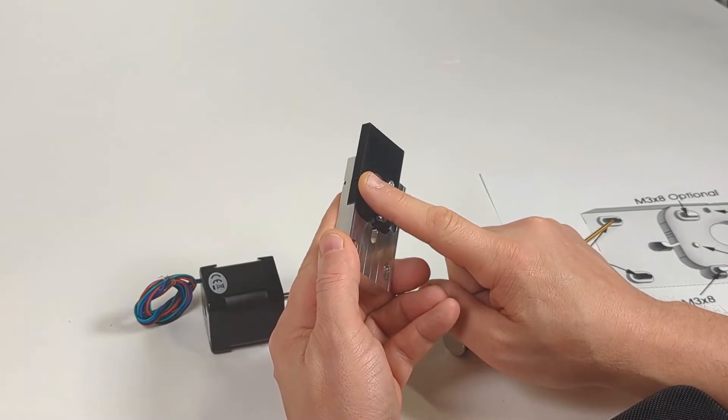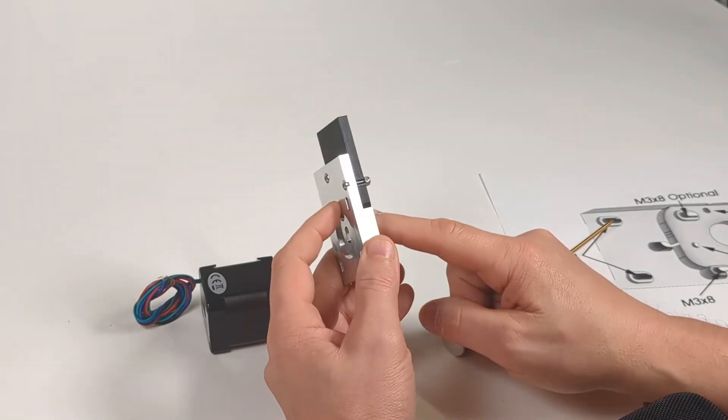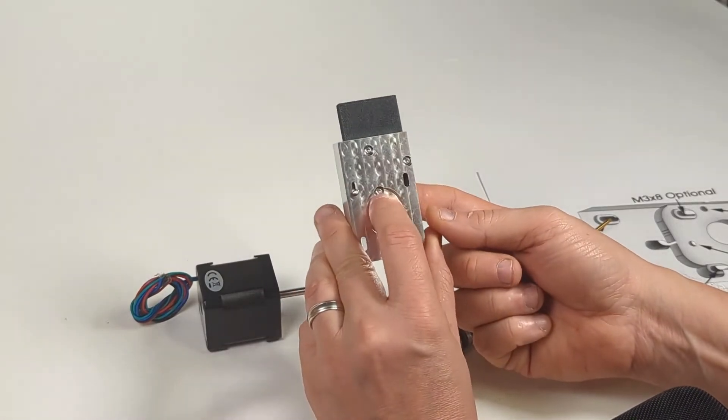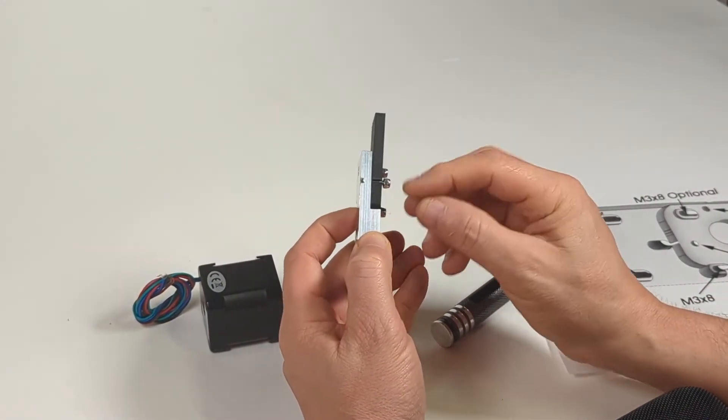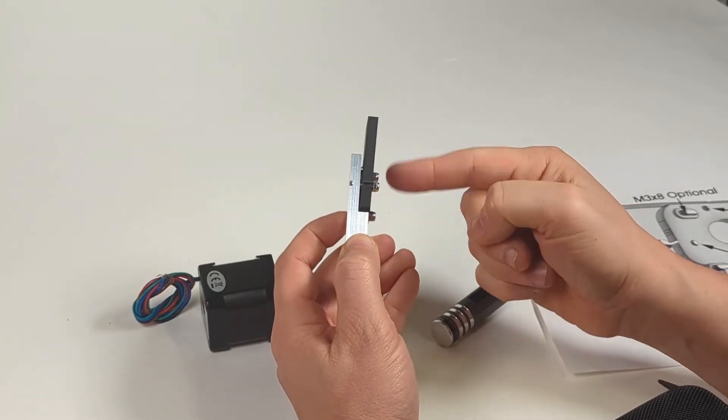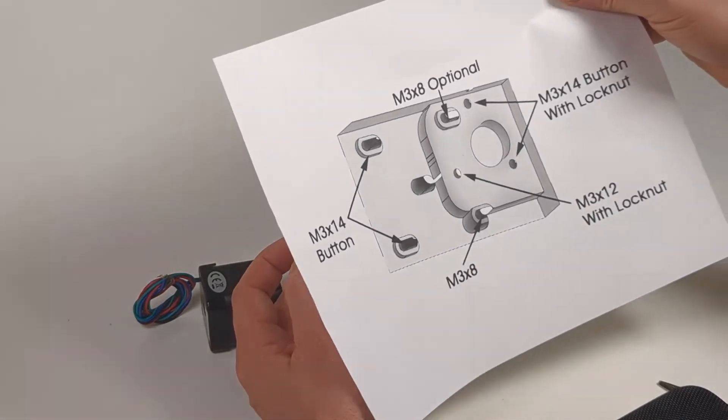And this is an m3 12. Reason being is because that's countersunk, it needs to be a little bit shorter. But you don't want it so long that it's going to interfere with the belts that are going to be out here. So all of these nuts and bolts are very specific. So please reference the diagram.